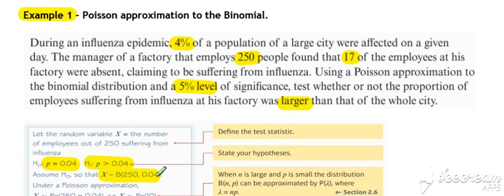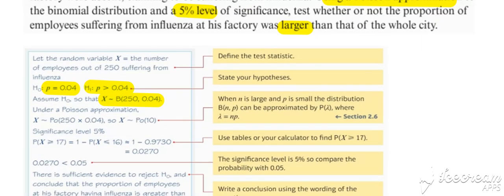So there's our binomial. Notice we've got quite a big value of n and a small value of p. And because the question says specifically use a Poisson approximation, then we have to do it that way.